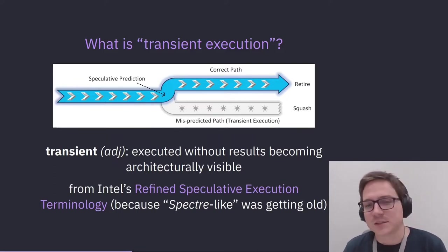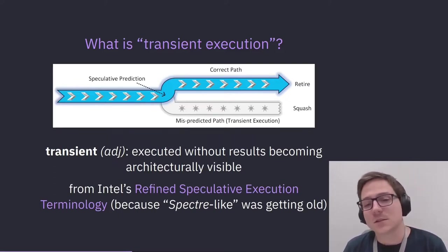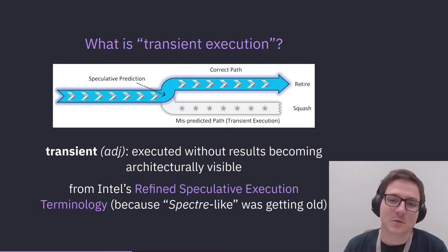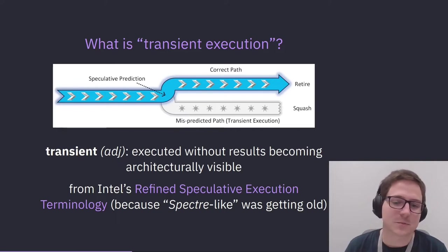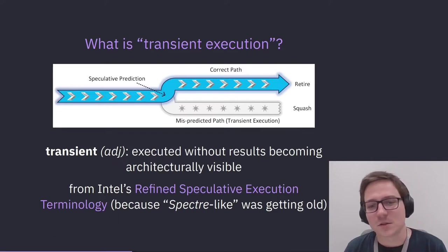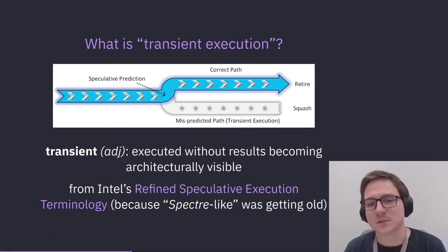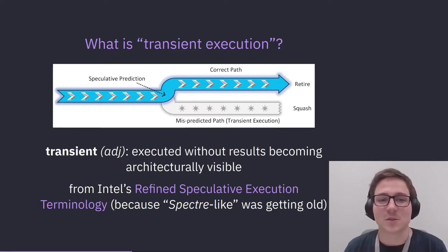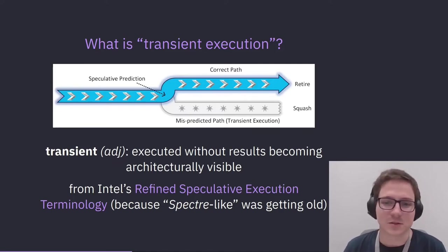The whole transient terminology came from Intel, and it's a good change. Before this, every speculative thing was called something like 'Spectre-like' or 'Spectre-variant-4-1-2a-q,' which is not the most descriptive or helpful. Having a term to specifically refer to mispredicted speculation is quite nice. That's what transient means, that's what transient execution is.